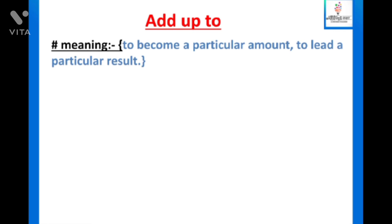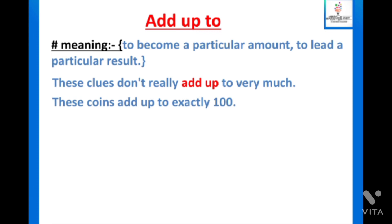Now next is add up to. Add up to means kisi cheez ko jod ke kisi ek particular amount tak jana, koi fixed amount aana, ya kisi cheezo ki madad se kisi ek result pe, kisi ek conclusion pe pahunchna. These clues don't really add up to very much. Yeh jo clues hain humare paas, kisi proper conclusion pe nahi pahunch rahe. These coins add up to exactly hundred. Yeh jo coins hain, yeh agar hum total jodhe ya add up to kare, to hume kya milega? Hundred.